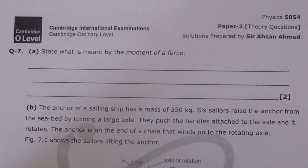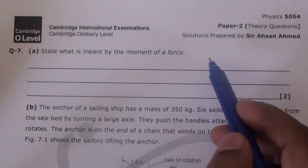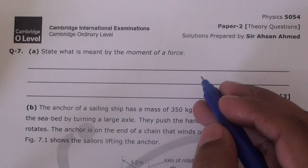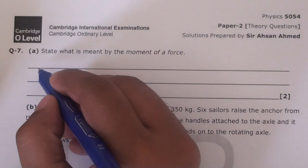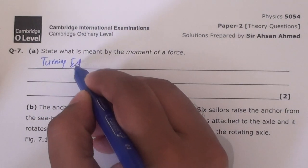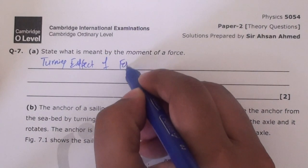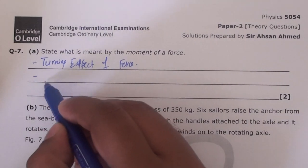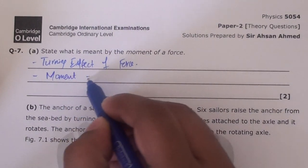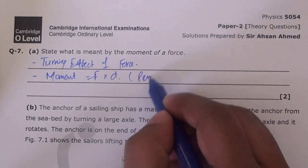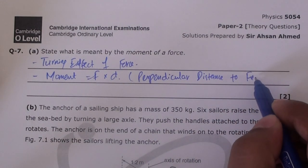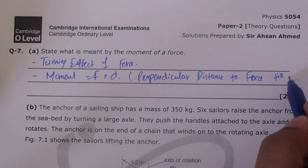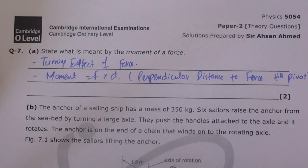We have a question from past papers related to principles of moment. Part A says: state what is meant by moment of force. Moment of force is the turning effect of a force. The formula is force multiplied by d, where d is the perpendicular distance from the pivot to the line of action of the force.